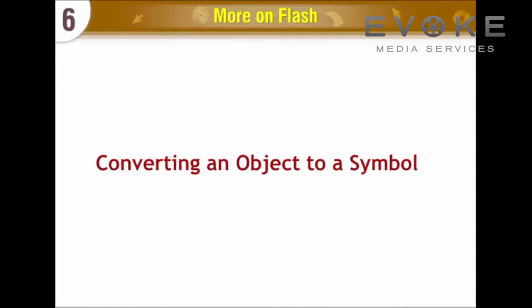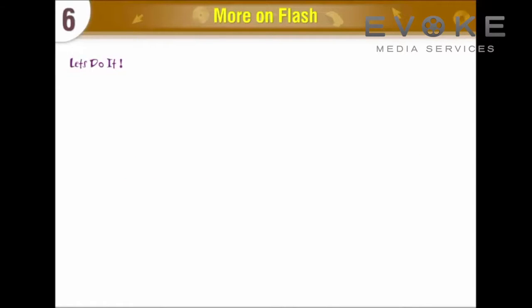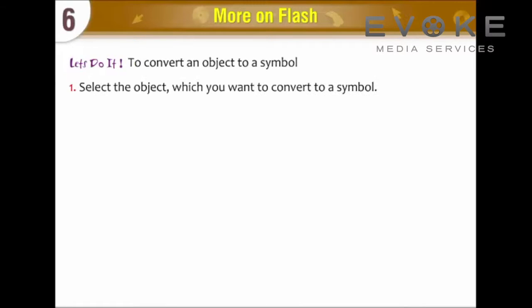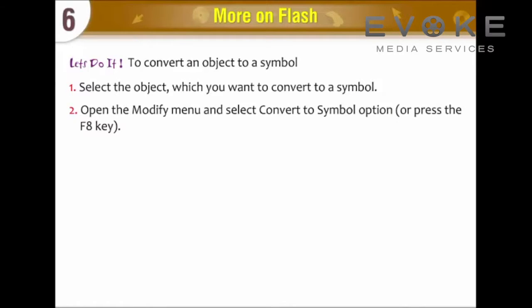Converting an Object to a Symbol. To convert an object to a symbol, select the object which you want to convert to a symbol. Open the Modify menu and select the Convert to Symbol option, or press the F8 key.